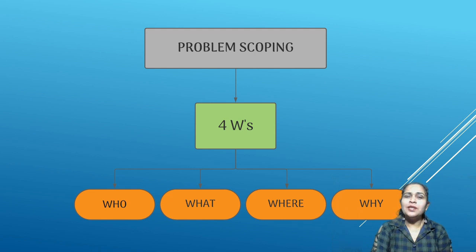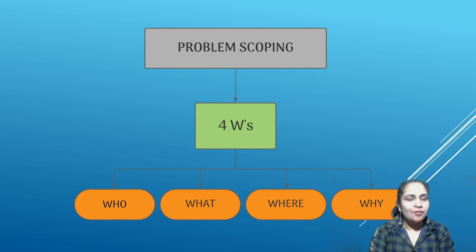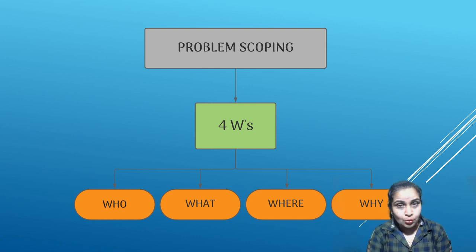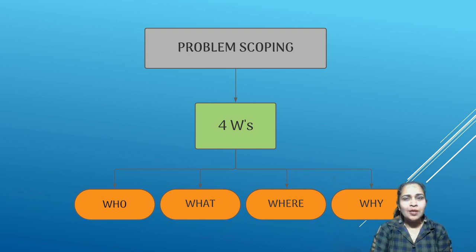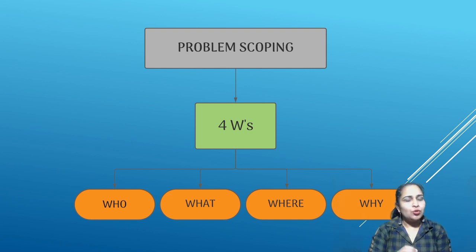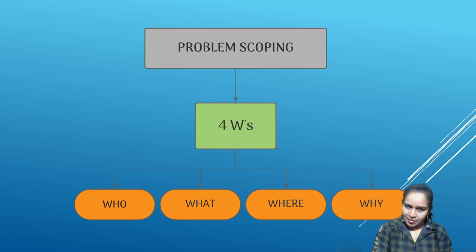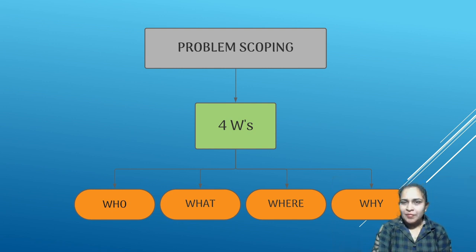The four W's are a very important part of problem scoping. When you want to identify a problem, you should be able to answer four questions: Who, What, Where, and Why. 'Who' means who are the stakeholders — the persons involved with the problem. It may be the owner of the company who has given you the task, or the person directly involved with the problem.